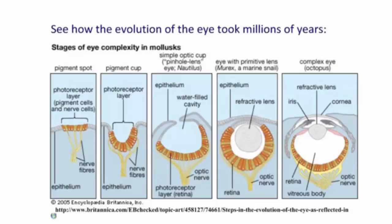Over time, we have a simple optic cup, where the chalice layer of photoreceptive cells and epithelial layers started to come together, the retina got a little deeper, and that cavity filled with water. Over time, we got a basic eye with a primitive lens — a refractive lens added as the epithelial layers connected. Nerve fibers turned into optic nerves, and then, of course, we have the complex eye. In this example, we're looking at the complex eye of an octopus — still with a refractive lens, but now with layers of iris and cornea, and the vitreous body contains other molecules as well.